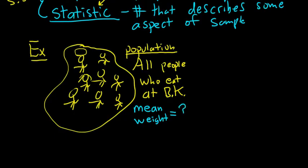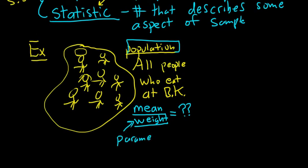Can we figure this out? Probably not. There's no way we can get the mean weight of all the people in the entire world who eat at Burger King. This number tells us something about the population, so it's called a parameter — and it's unknown, we cannot figure it out. It's a mystery.